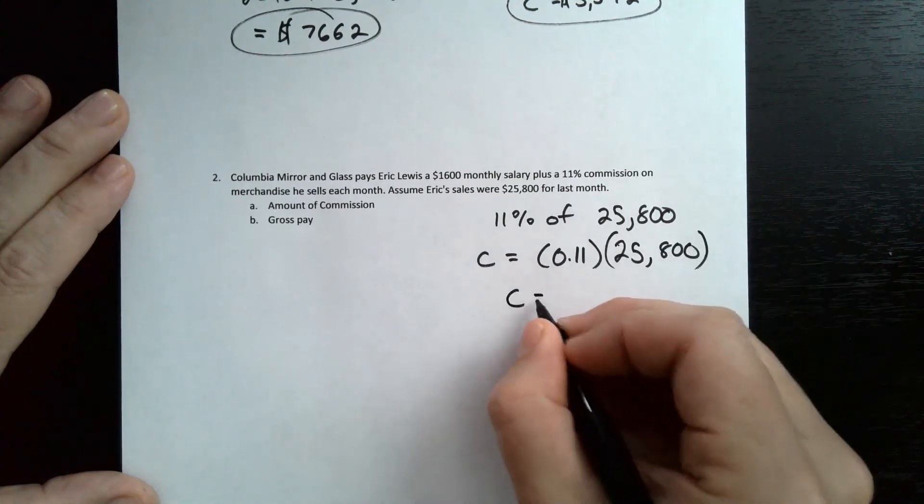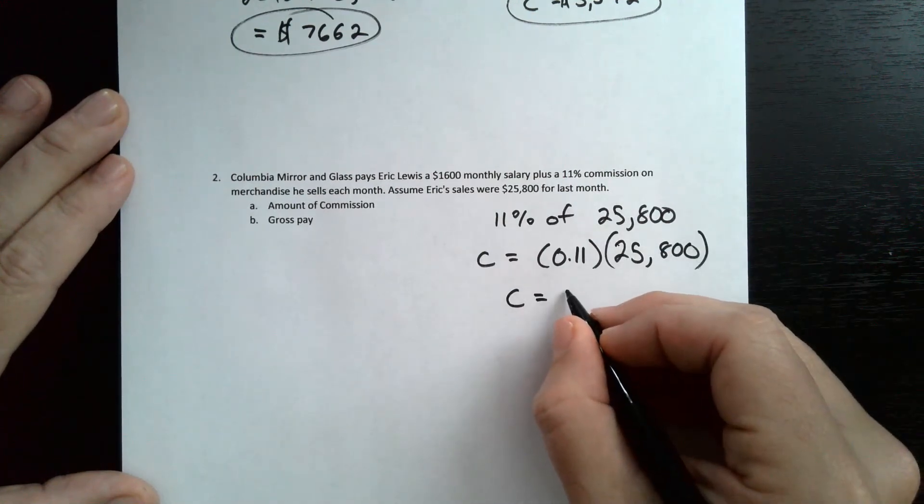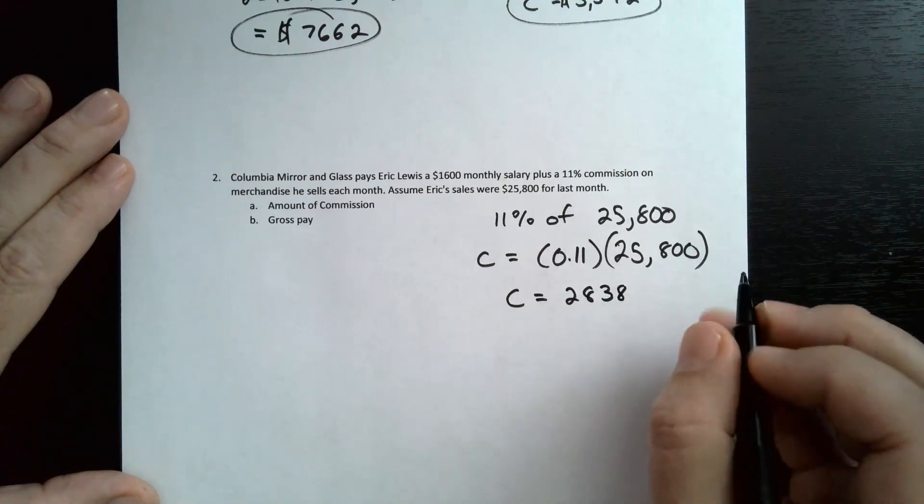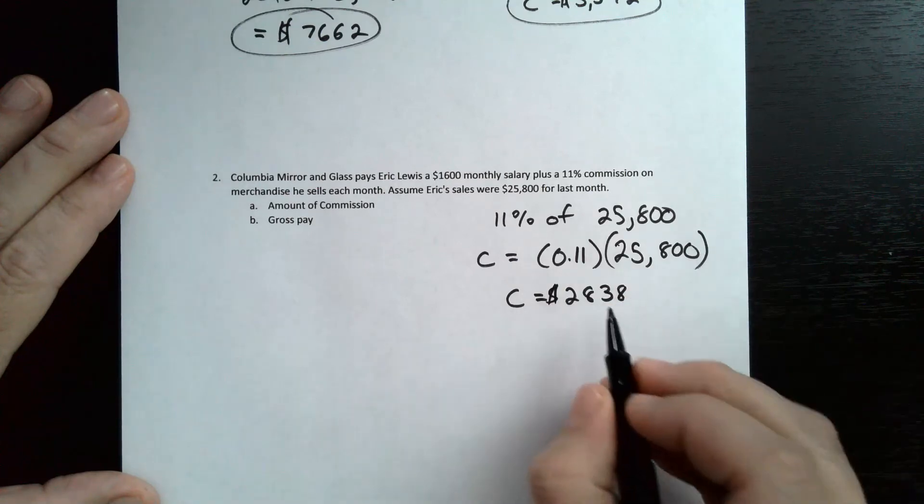If you multiply those two together, you'll get $2,838. That's the commission. That's A.